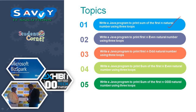Write a Java program to print the first n even natural numbers using three loops. Write a Java program to print the first n odd natural numbers using three loops. Next, write a Java program to print the sum of the first n odd natural numbers using three loops. For any program, we are implementing using three loops — that is the primary agenda we are taking into consideration.